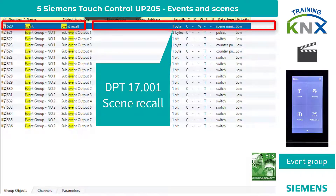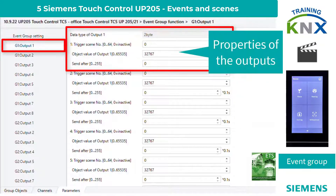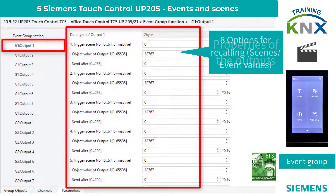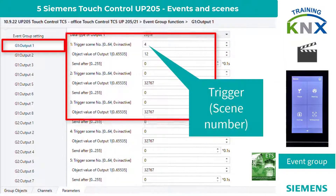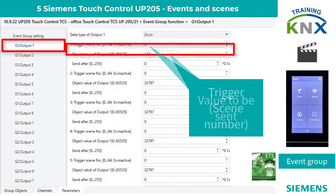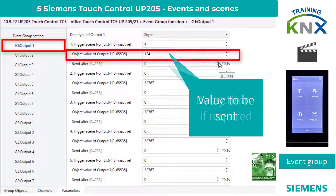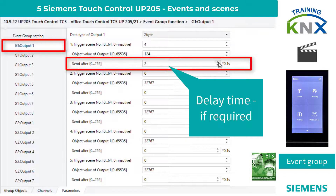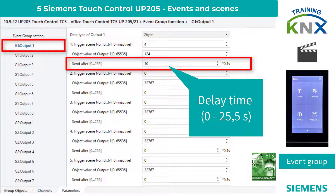Looking closer at the outputs: there are 8 call options available for each output. The triggering scene number and the value to be sent must be specified. If required, also a delay time. Please note: the maximum delay is 25.5 seconds, and it always refers to the trigger time.